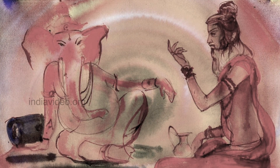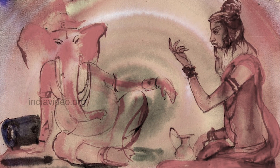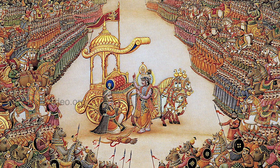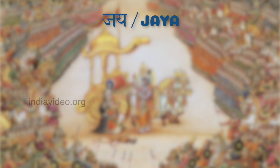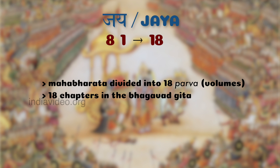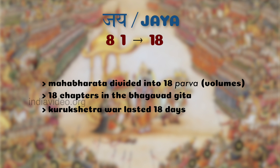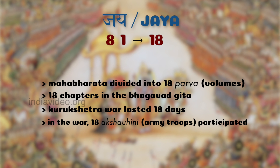A very interesting possible manifestation of Kattapayadi from a much earlier period comes from the epic Mahabharata. The original name for the epic given by its author Veda Vyasa was Jaya. In the Kattapayadi system, Jaya codes for 18, a recurring number in this epic. The Mahabharata is divided into 18 parvas or volumes; there are 18 chapters in the Bhagavad Gita; the decisive battle of Kurukshetra lasted for 18 days; and 18 Akshauhinis participated in that war. Perhaps the Kattapayadi system existed even at the time when the Mahabharata epic was written, several centuries before BCE.